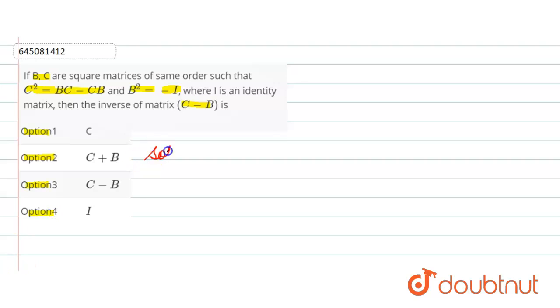Now let's come to our solution. So here, the given expression is C squared is equal to BC minus CB. C squared minus BC plus CB is equal to 0.